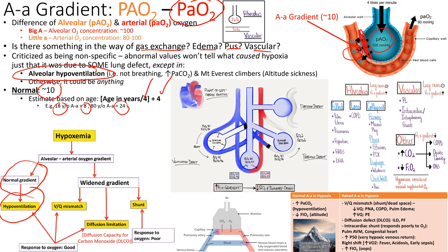With a normal A-a gradient, you can tell the hypoxia is from hypoventilation, not lung pathology. For example, if PO2 is 40 because they weren't breathing — did they stop breathing from a PE, or from orthostatic hypotension causing shallow breathing? A raised gradient, however, means low PO2 with something in the way — edema, effusion, infiltrates, shunts, dead space. It tells you there's a lung process, but not which one specifically.